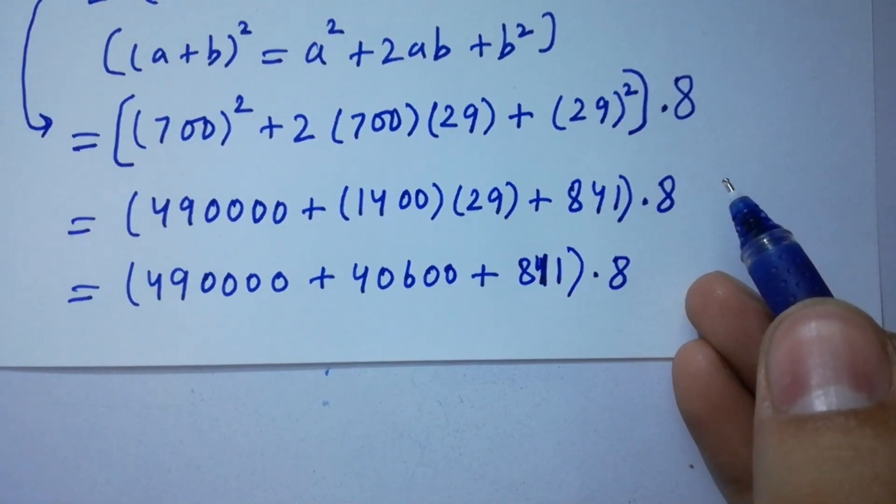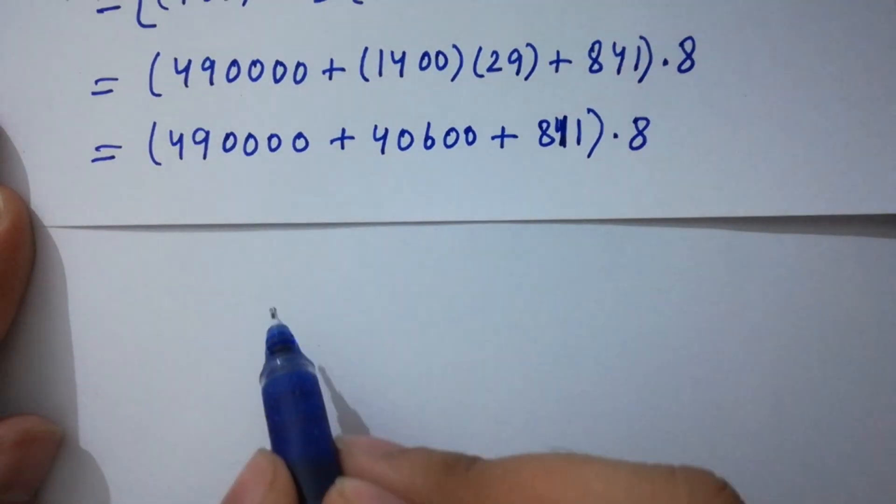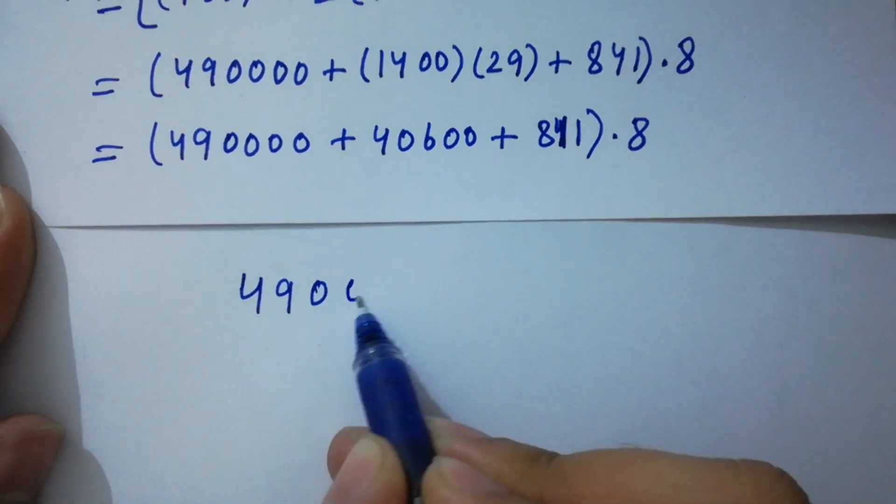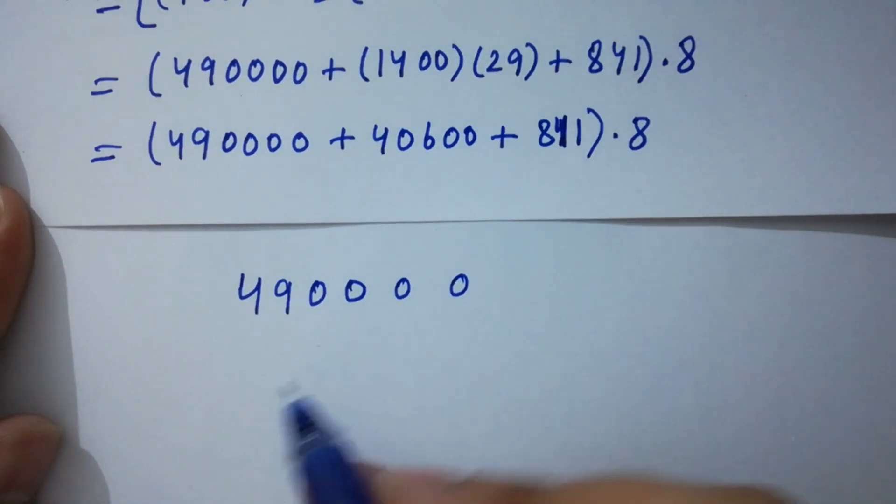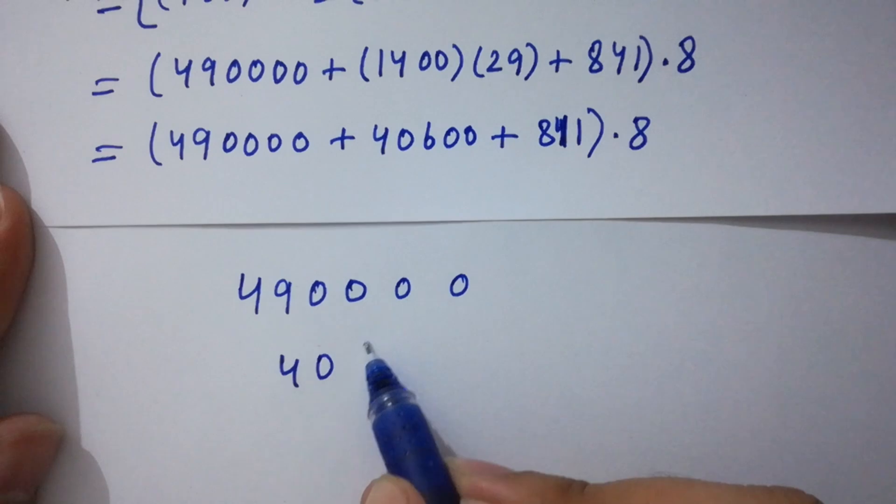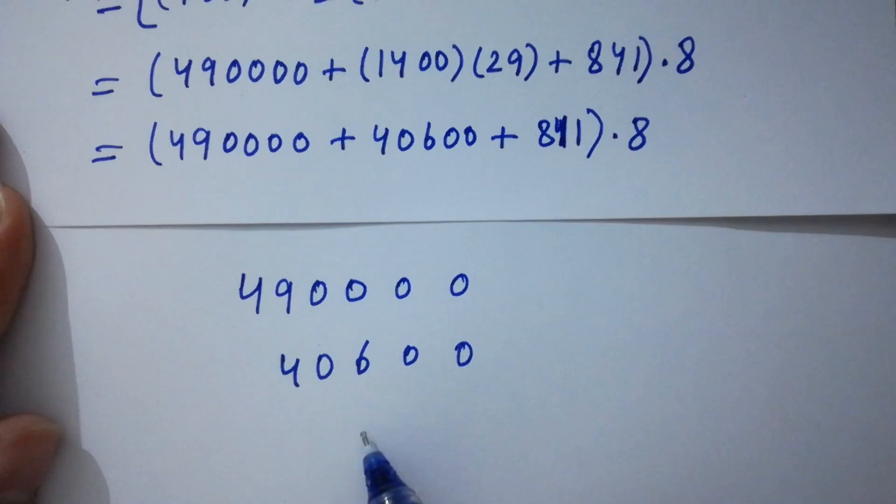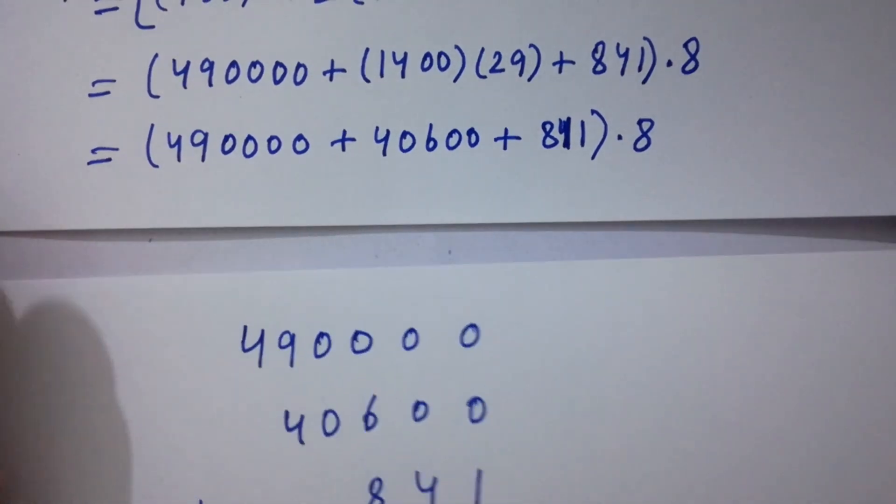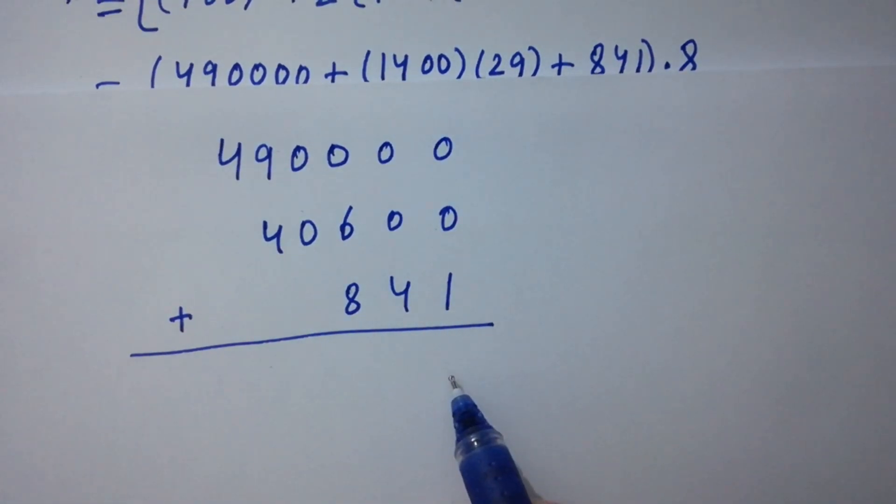I am going to add them. We can write 490000, 40600, and 841. Adding: 0 plus 0 plus 1 is 1, 0 plus 0 plus 4 is 4,